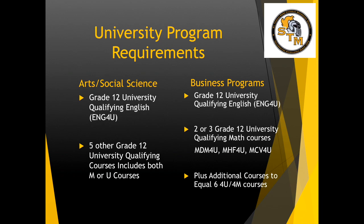If you are interested in business programs, you will require Grade 12 English 4U and 2 or 3 Grade 12 university qualifying math courses — that is Data 4U, Functions 4U, and Calculus 4U. Please remember that you must take MCR 3U in order to qualify for Functions, and you must complete Functions 4U before you can take Calculus 4U. We will be scheduling Functions in first semester and Calculus in second semester if you require both. Plus additional courses to equal the 6 4U/4M courses.